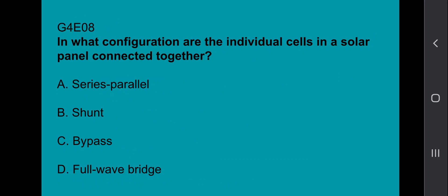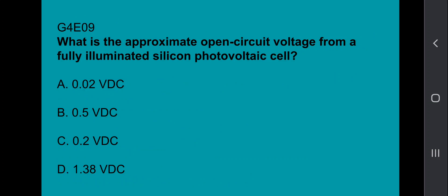G4E08, in what configuration are the individual cells in a solar panel connected together? That's going to be series parallel. G4E09 says, what is the approximate open circuit voltage from a fully illuminated silicon photovoltaic cell? That's going to be 0.5 VDC.